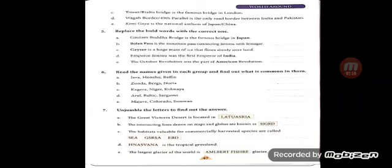Question seven: unjumble the letters to find the answer. A: the Great Victoria Desert is located in Australia. B: the intersecting lines drawn on maps and globes are known as grids. C: the habitats valuable for commercially harvested species are called sea grass beds. D: Savannah is a tropical grassland. E: the largest glacier in the world is Lambert Fisher Glacier.